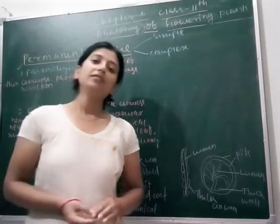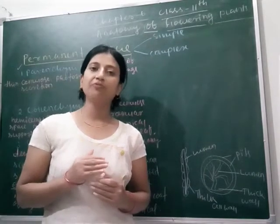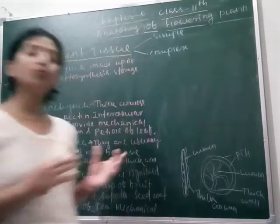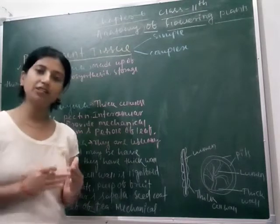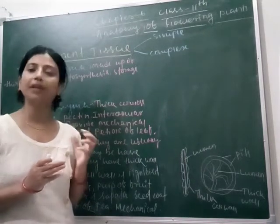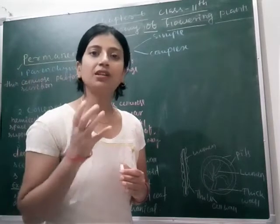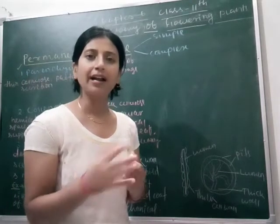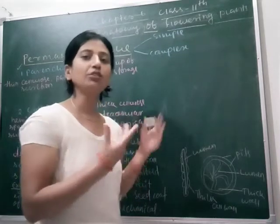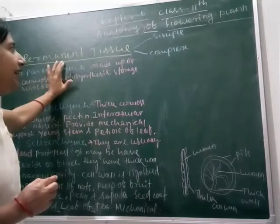As I have told you, tissue is made up of a similar type of cells which perform a particular type of function. Tissues are of two types: one is meristematic tissue and another is permanent tissue. We have already studied meristematic tissue and you also got the idea of what we will study in the future about this chapter. So today let's start permanent tissue.